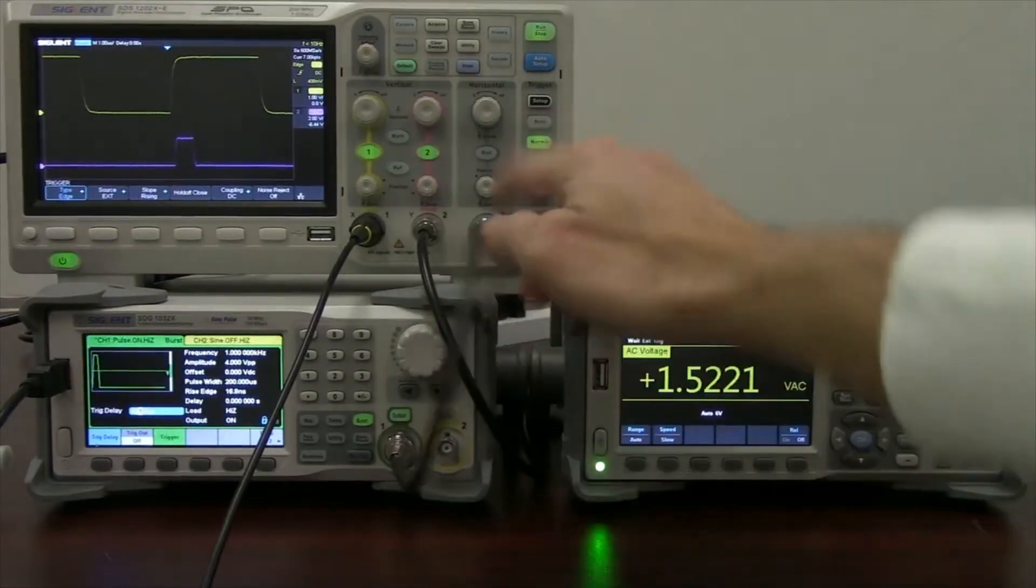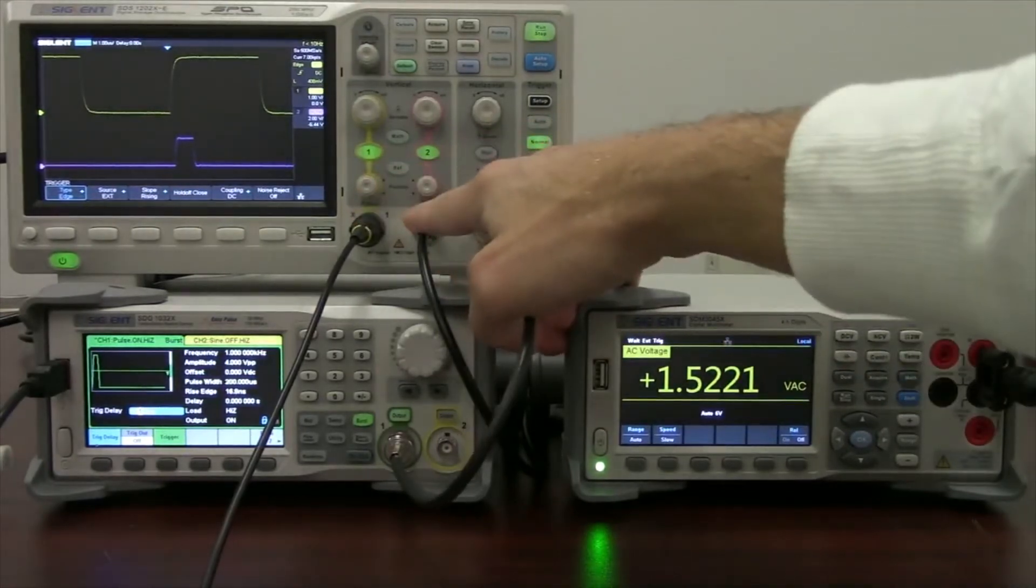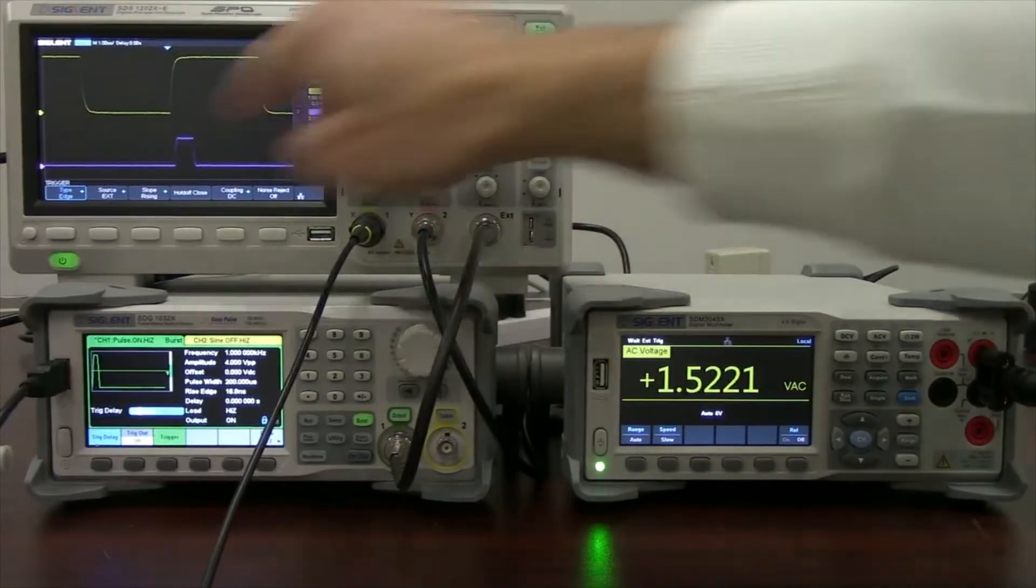That external trigger input is going to help us because it acts like, or it can be configured to work just like any of the other channels on the oscilloscope through the trigger model.